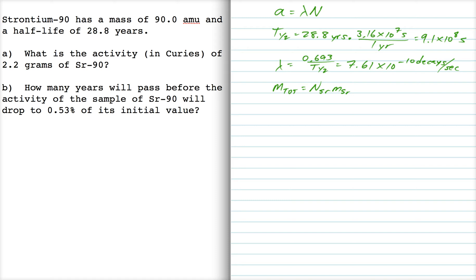So N is the total mass divided by the mass of strontium. Now the total mass we're told is 2.2 grams, so 0.0022 kilograms, and now we're going to divide that by the mass of strontium, which is 90 amu, but we've got to convert that into kilograms by multiplying by this conversion factor.